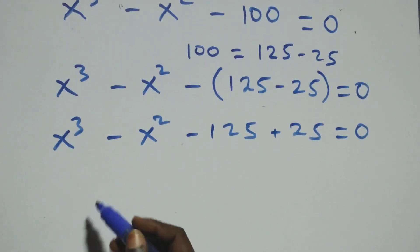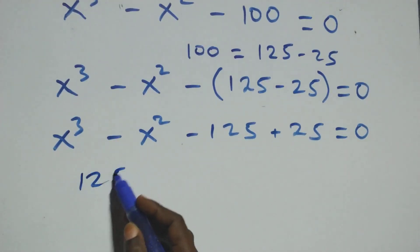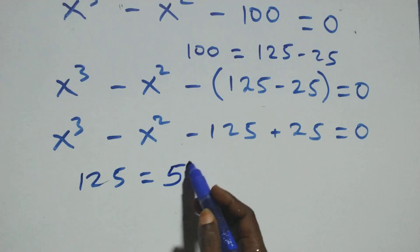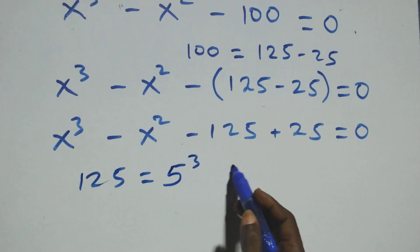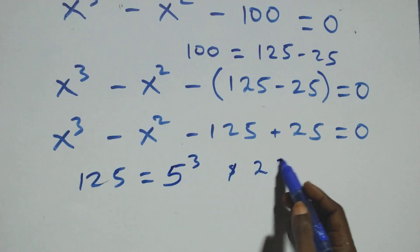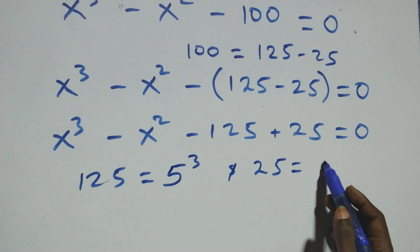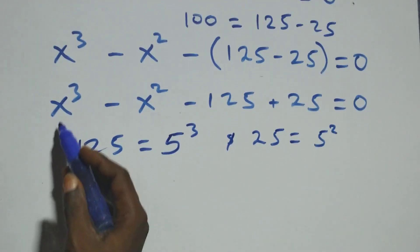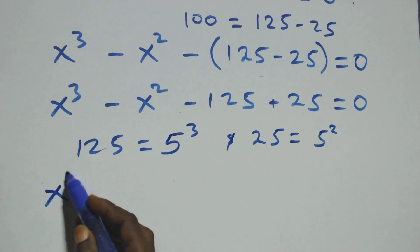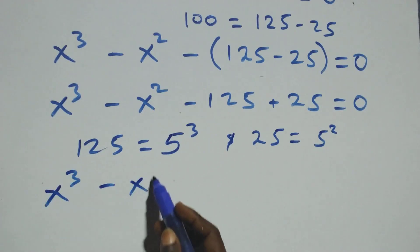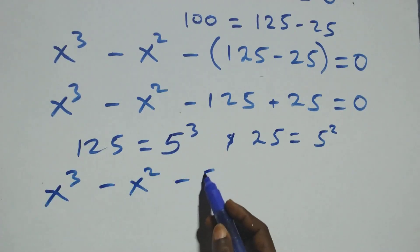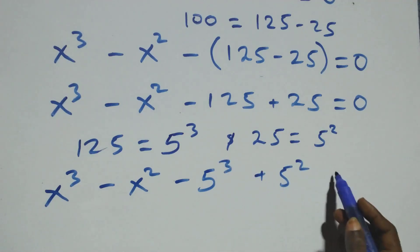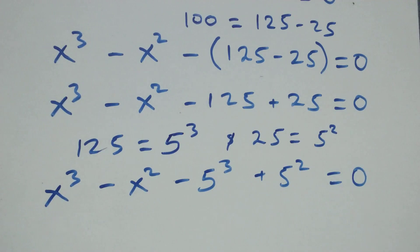Which implies, we can express 125 as 5 times 5 times 5, that's 5 raised to the power 3, and also 25 as 5 times 5, that's 5 raised to the power 2. Then this equation becomes x raised to the power 3 minus 5 raised to the power 3, plus 5 raised to the power 2, equals to 0.